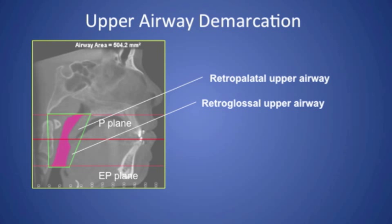Based on previous reports, we defined the upper airway between two planes: the superior plane from PNS to Basion, which was oriented to be parallel to the floor, and the inferior plane, the horizontal line tangent to the superior point of the epiglottis. To evaluate specific sections of the airway, the upper airway was further divided into two segments — the retropalatal and retroglossal airways — by a horizontal plane crossing the most posterior and inferior point of the soft palate.